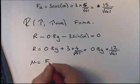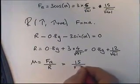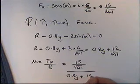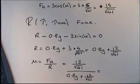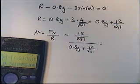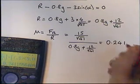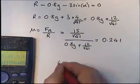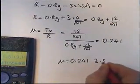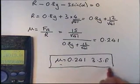Now μ equals friction divided by R, so that's 15 over root 41 divided by (0.8g plus 12 over root 41), which you can put into your calculator. I make the answer 0.241. Remember the coefficient of friction is unitless, so μ equals 0.241 to 3 significant figures. And I want to box my answer.